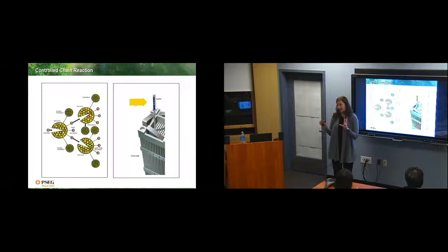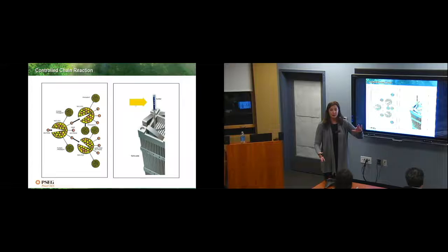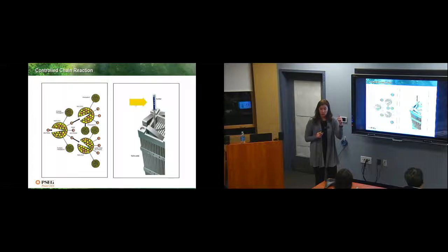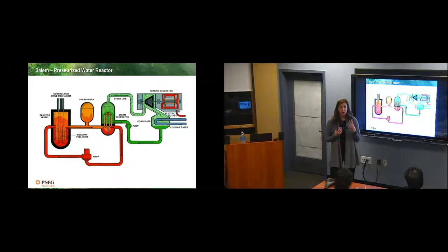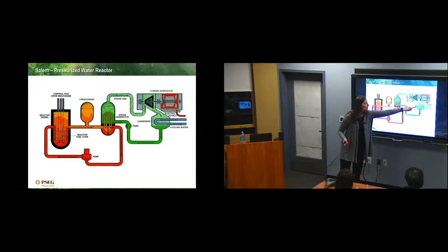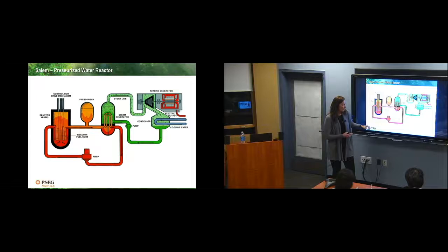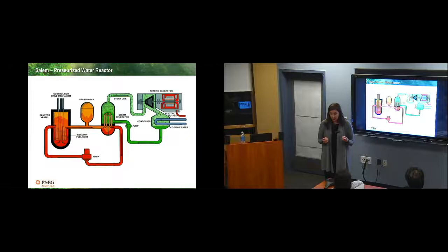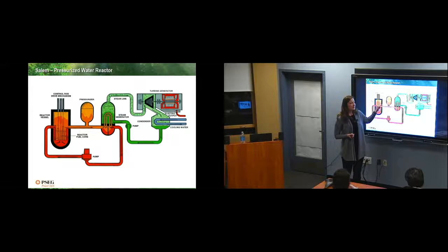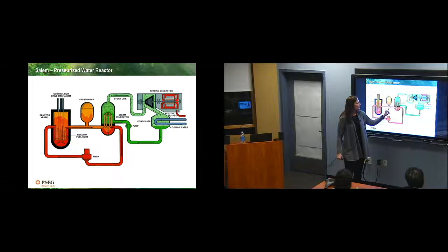The only thing we need to know is two things happen when it splits. Number one, it releases energy in the form of heat. And number two, it releases more neutrons, so it can continue the fission process. Controlled. That is our key word there. Nothing is haphazard in nuclear. You want to make sure you have control of it, so it just doesn't keep going. We keep everything controlled and contained. So we have two types of reactors. We're the only site in the country that has two different types of reactors on the same site. Those two Salem units are pressurized water reactors. So they have three loops.